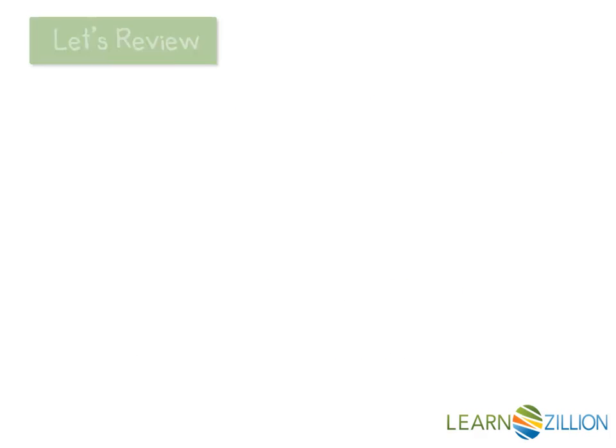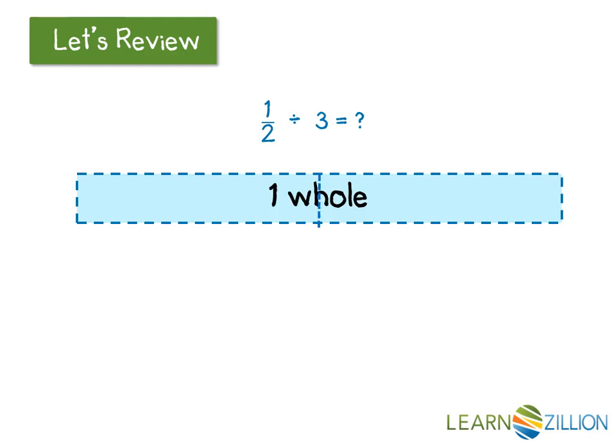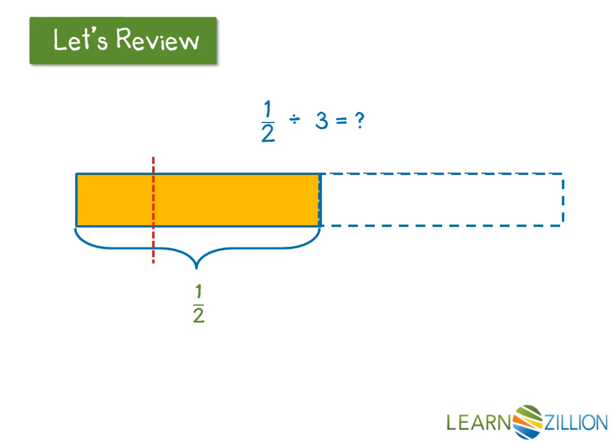You also know that you can divide fractions by whole numbers as seen here. This example shows how a fraction, 1 half, can be divided by a whole number, 3. By dividing the dividend into 3 equal parts and determining the size of the resulting pieces, we can see the quotient is 1 sixth.